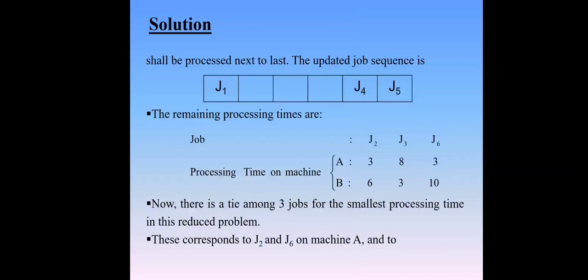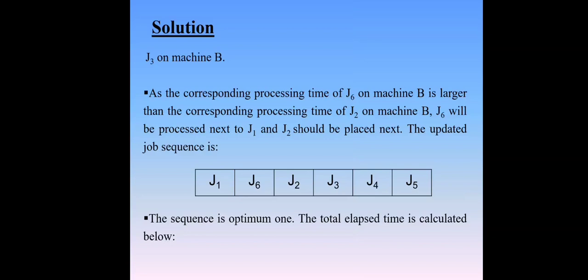The updated job sequence: the first place is J1, last place is J5, second last is J4. The remaining processing times — we again neglect J4 and J5, so remaining we get J2, J3, J6 only. Again we find out the smallest value. Now there is a tie among three jobs for the smallest processing time in this reduced problem. This corresponds to J2 and J6 on machine A, and to J3 on machine B. As the corresponding processing time of J6 on machine B is larger than the corresponding processing time of J2 on machine capital B.